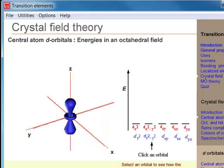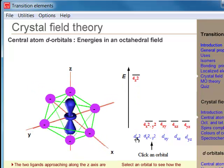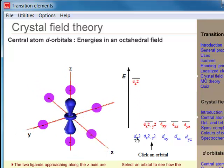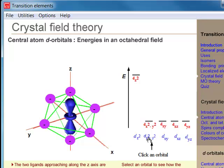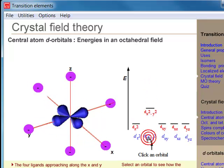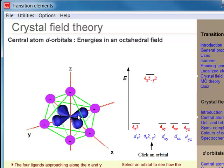In an octahedral field, six ligands approach: 2 along the plus and minus z-axis, 2 along the plus and minus x-axis, and 2 along the plus and minus y-axis. When a ligand encounters a lobe of the central atom's d-orbitals, it raises the energy.